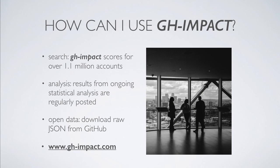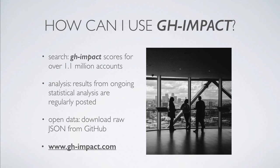How can you use GH Impact in your own work? The easiest way is with the search interface available on our website, which makes it simple to look up the score for any of the 1.1 million accounts that have scores. I'm also publishing the results of my analysis on the website on a regular basis, and the GH Impact dataset can be downloaded as raw JSON files. All of these are available through the website www.gh-impact.com.